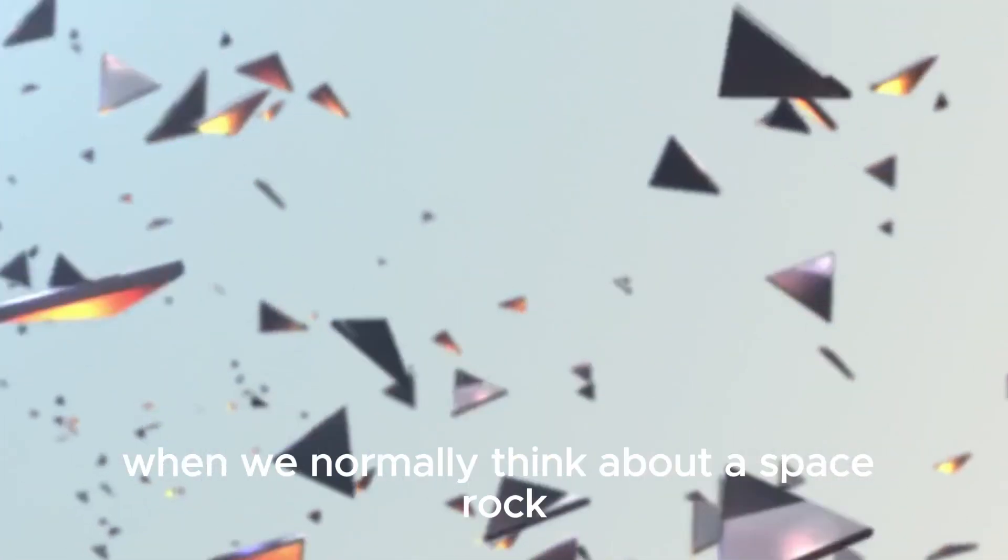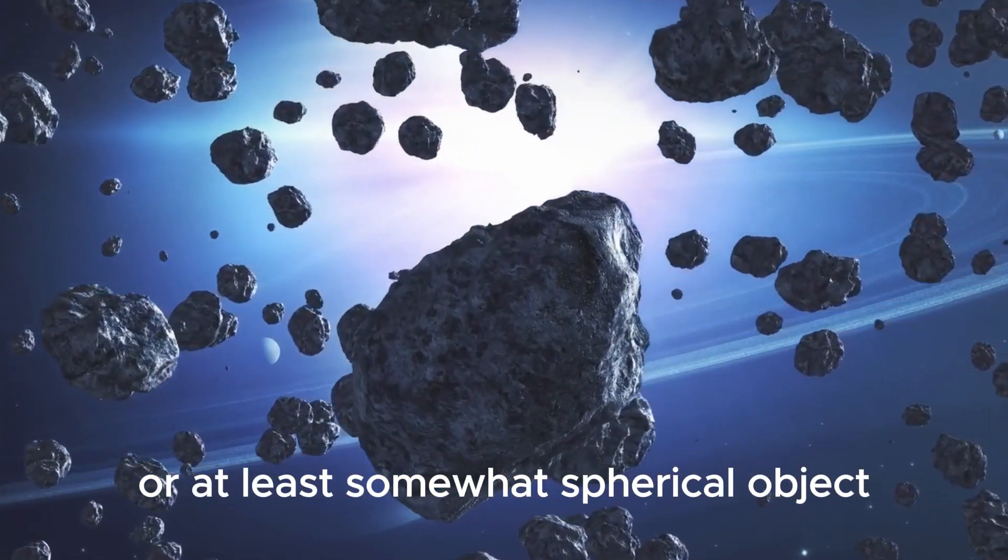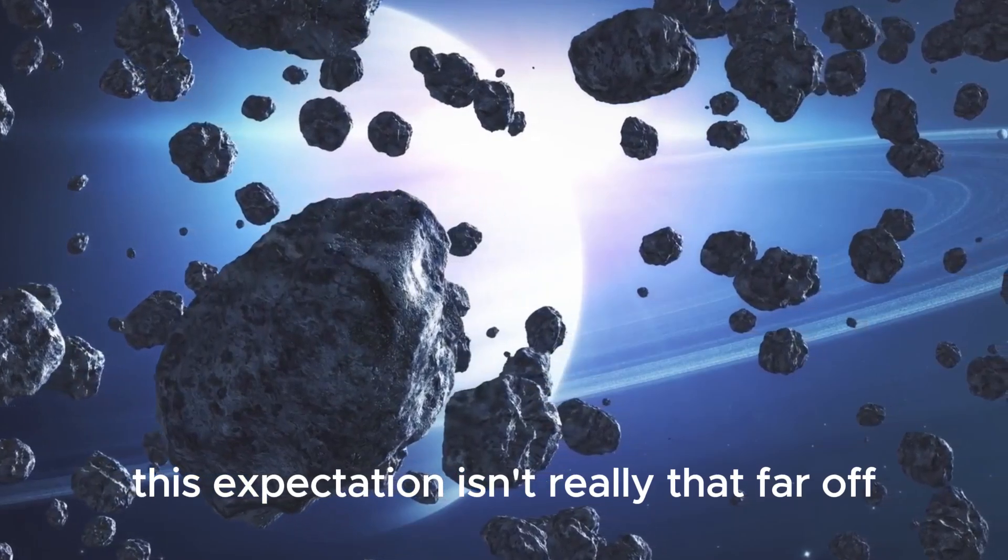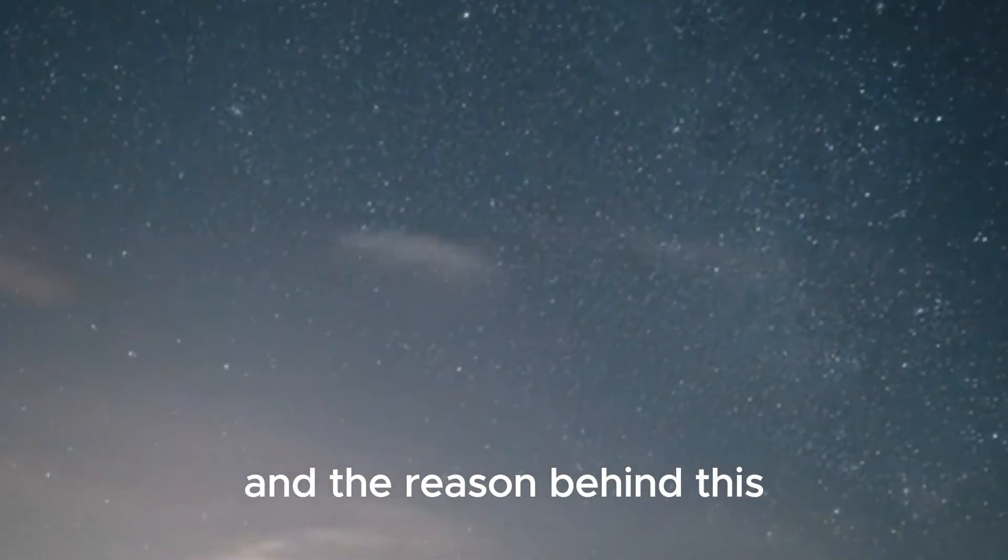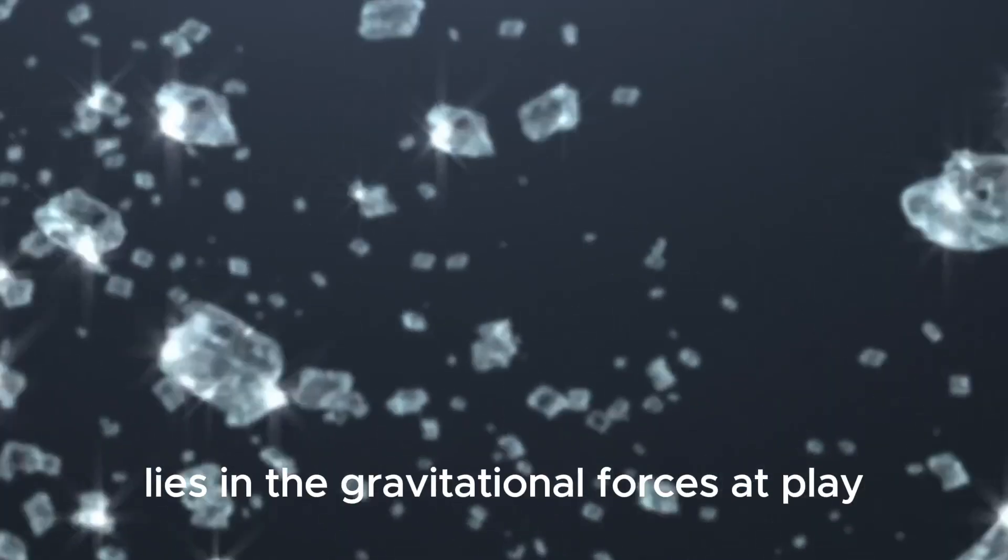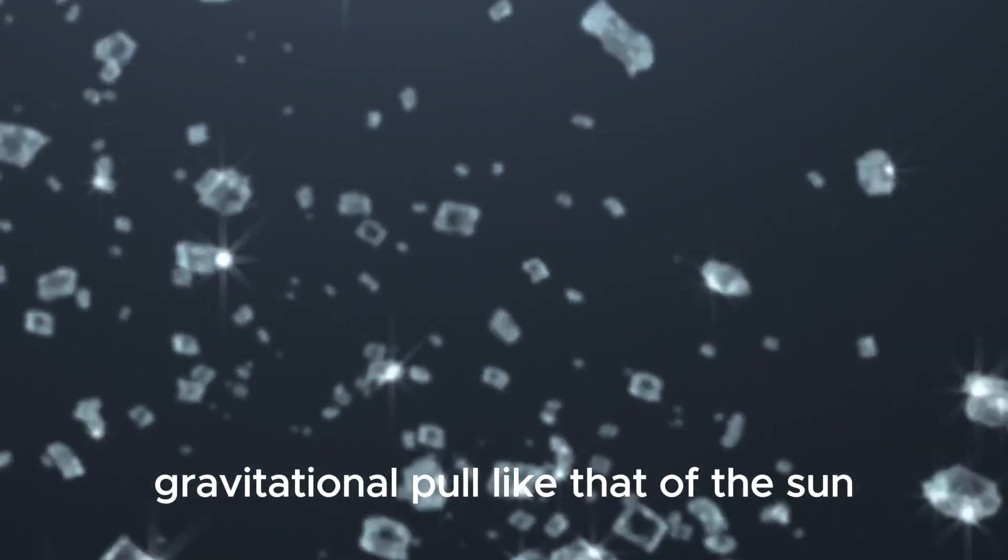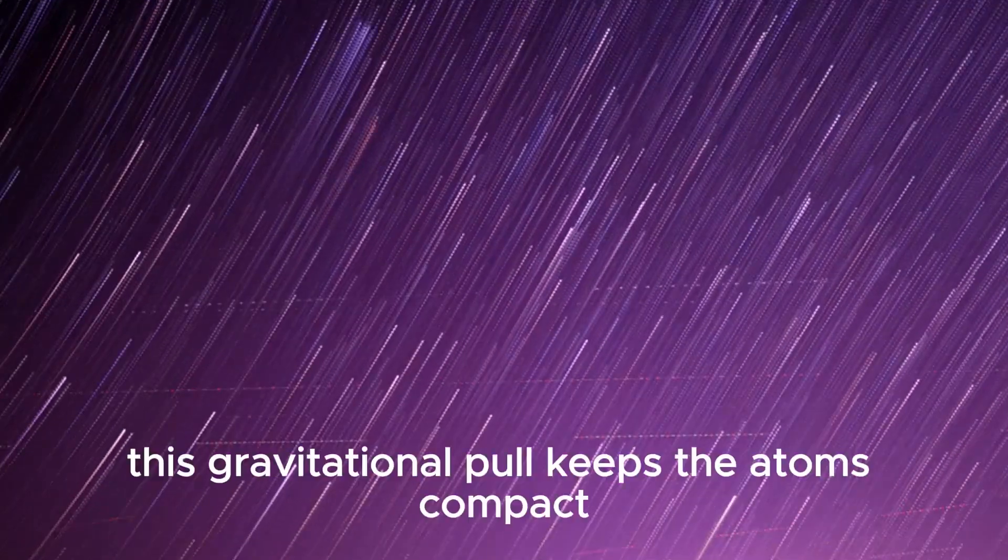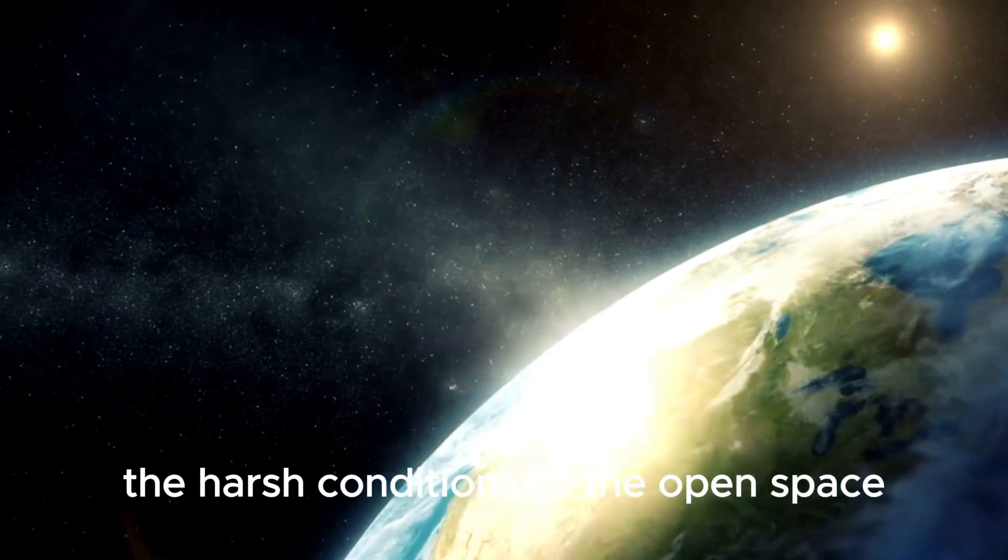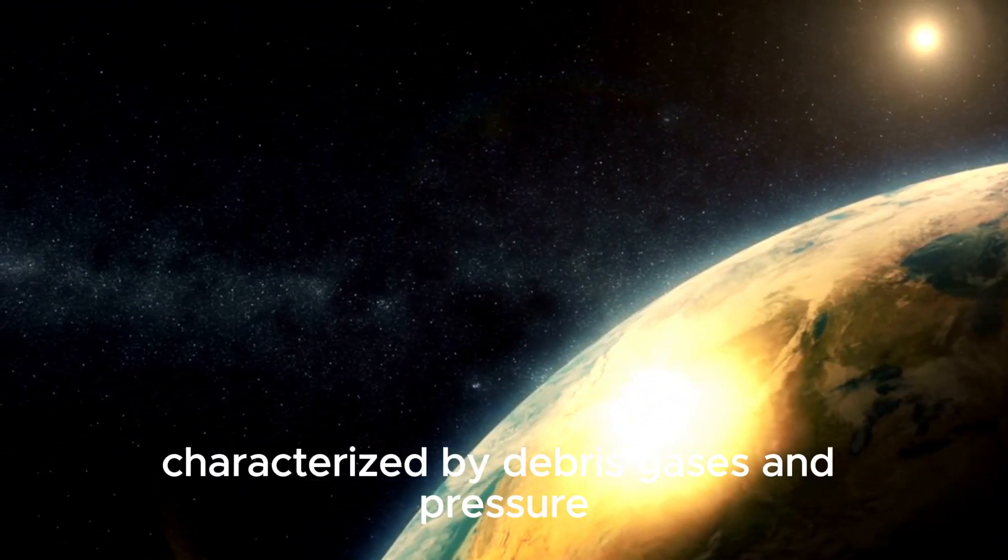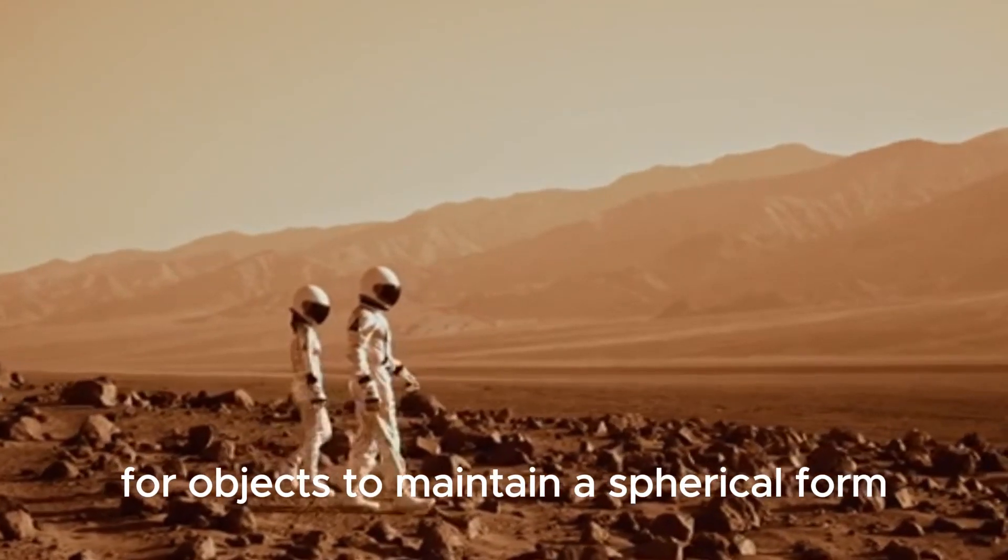When we normally think about a space rock, whether it's an asteroid or a comet, our mind typically creates an image of a round or at least somewhat spherical object. This expectation isn't really that far off, as most celestial bodies in space tend to adopt spherical shapes. And the reason behind this lies in the gravitational forces at play within an object. The atoms are typically attracted to a single gravitational pull like that of the sun or most other massive celestial bodies. This gravitational pull keeps the atoms compact and spherical. But that's not all. The harsh conditions of the open space, characterized by debris, gases, and pressure, further reinforced the tendency for objects to maintain a spherical form.